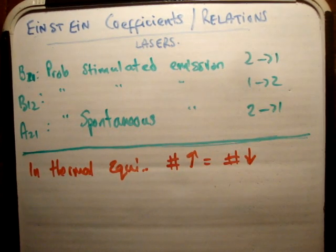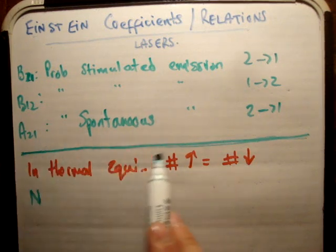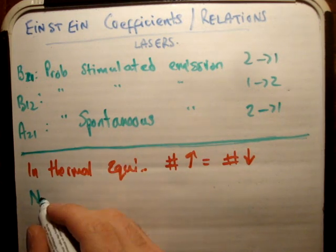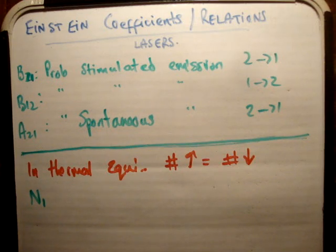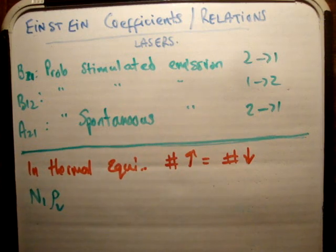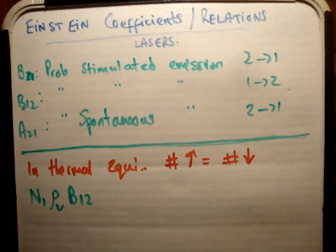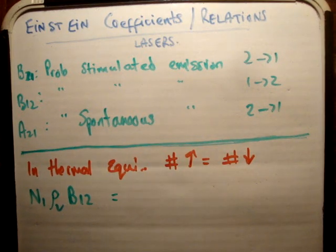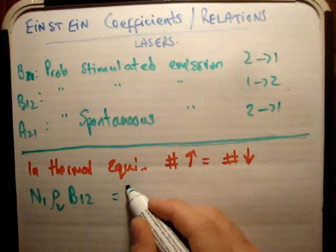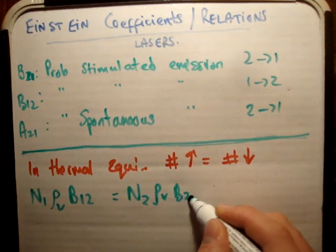Let's put a bit of mathematics onto this and look at the number of upward transitions. This can only be stimulated, as spontaneous transitions can only happen going downwards. So we're going to have the population density in energy level 1 multiplied by the energy density times the probability of a photon being absorbed, allowing a transition from energy level 1 to energy level 2. And that's equal to the probability of a transition downwards.